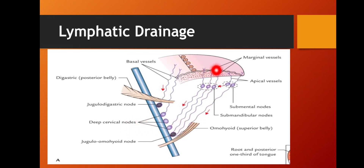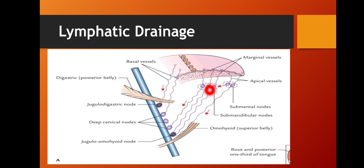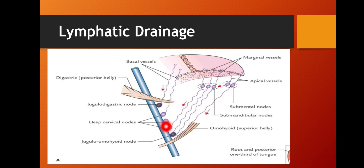There are also some marginal vessels that cover the margins of the tongue. From the marginal vessels, lymph drains into the submandibular nodes. From the submandibular nodes they drain either into the deep cervical nodes or jugulo-omohyoid.